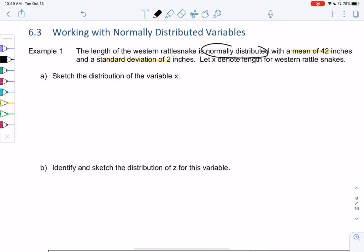So because I know it's normally distributed, when I sketch the distribution of x, I know it fits that normal curve. The number that goes in the middle is the mean. So 42 goes in the middle, or the center.